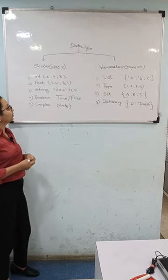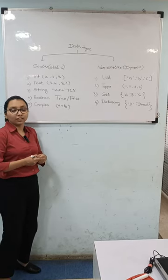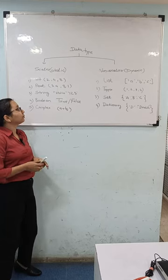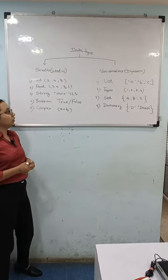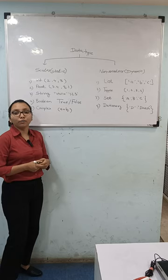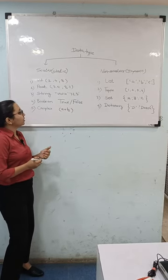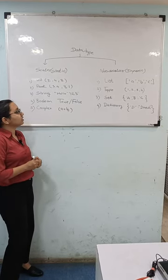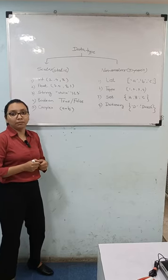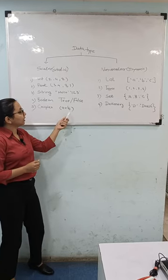Next one is String. String is a sequence of characters which is enclosed in double quotes or single quotes. Next is Boolean. Boolean represents output in the form of true or false. Next one is Complex. Complex represents a complex number, that is a plus bj.